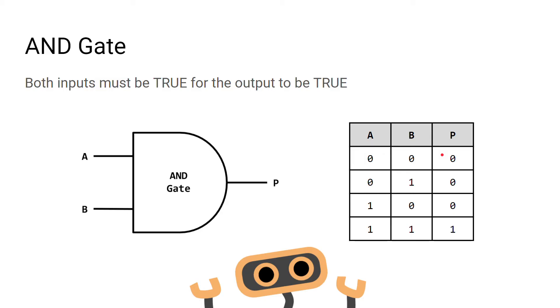In the second row, if A is 0 and B is 1, P will again be 0. If A is 1 and B is 0, P will still be 0. The only way P becomes 1 is if both A and B are true, meaning electricity is passing through both inputs.